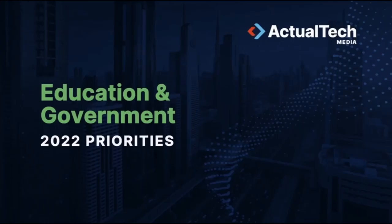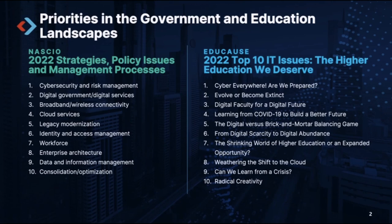Hi there. I'm Scott Lowe of Actual Tech Media, and thank you for joining us for today's event. Before we get started with our great lineup of speakers today, I want to talk a little bit about education and government 2022 priorities, brought to you by some leading organizations in their space that analyze these vertical market spaces. There are two that really stand out: NACIO — the National Association of State Chief Information Officers — and EDUCAUSE, the predominant educational nonprofit that helps support higher education institutions.